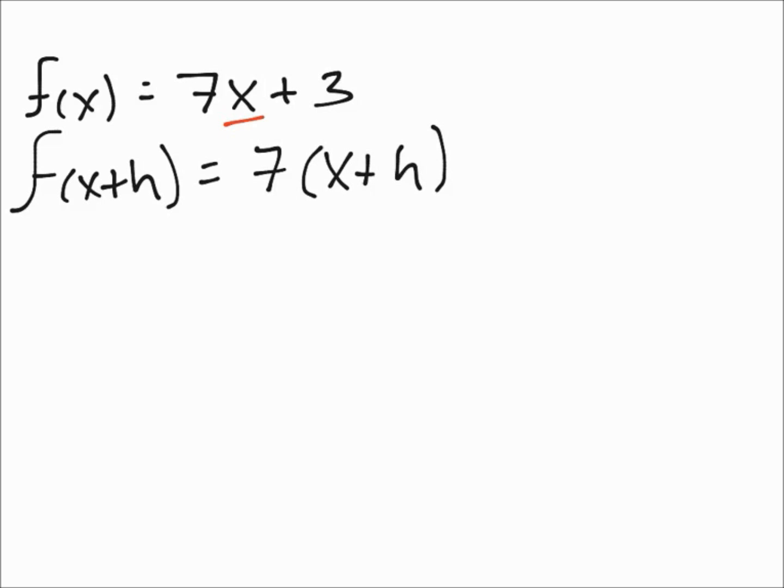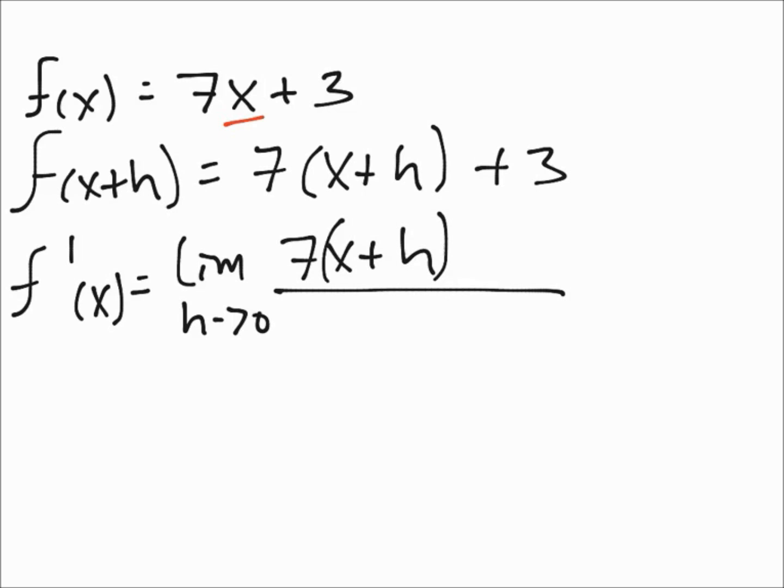So we plug it into our formula: limit h equals to 0 of 7(x+h)—remember to put the parentheses—plus 3, minus (7x + 3) over h.